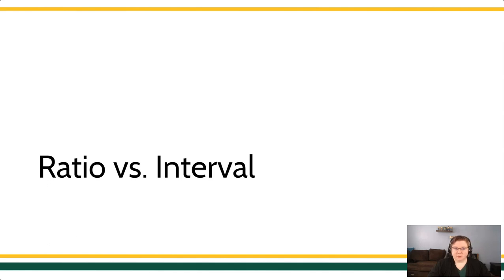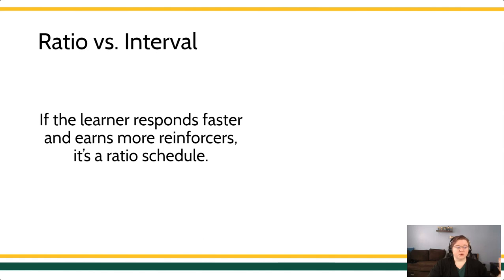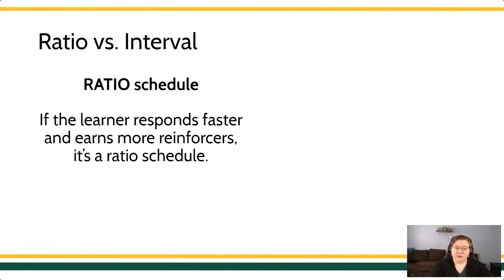Let's begin first by talking about ratio and interval-based schedules. Remember that these are all contingent on specific responses. Even an interval-based schedule, which requires a certain amount of time to pass, still requires that the organism emit a response, and that response contacts reinforcement. The big difference between ratio and interval-based schedules is what happens when you respond faster. If the learner responds faster and earns more reinforcers because they're responding faster, it's a ratio schedule because it's the number of times that the learner emits the response that matters. In a ratio-based schedule, the faster you respond, the more reinforcers you earn.